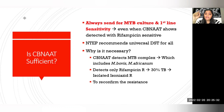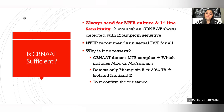Why is universal DST necessary? CB-NAT detects MTB complex, which includes M. bovis and M. africanum — not just MTB — and it detects only rifampicin resistance. According to the data, 30% of TB cases also have isolated isoniazid resistance. So it is very necessary to always send for first-line DST or LPA, which will also help reconfirm the resistance.